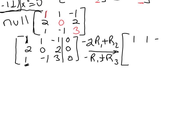So I'm leaving row 1 alone. Negative 2 plus 2, negative 2 plus 0, and then negative 2 times this, so positive 2 plus 2, and then 0 plus 0. And in the last row, negative 1 plus 1, negative 1 plus negative 1, negative, so positive 1 plus 3, and 0 plus 0.